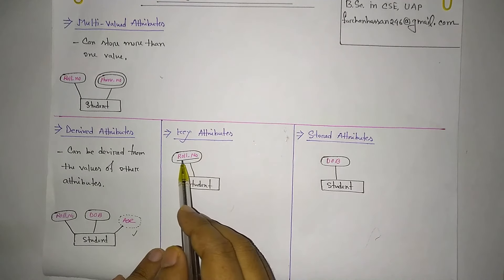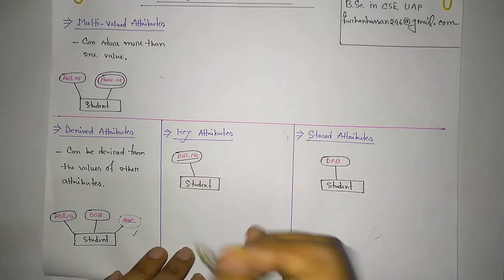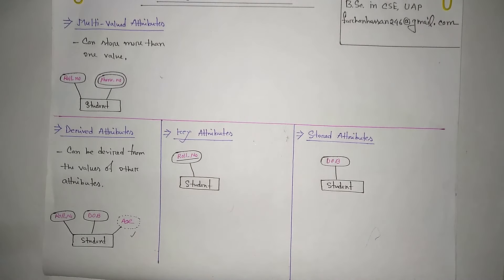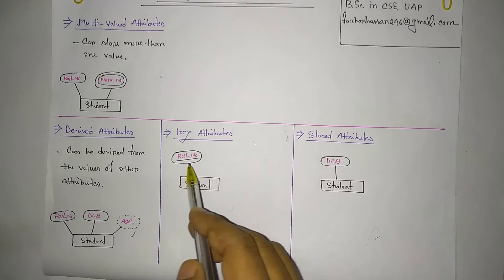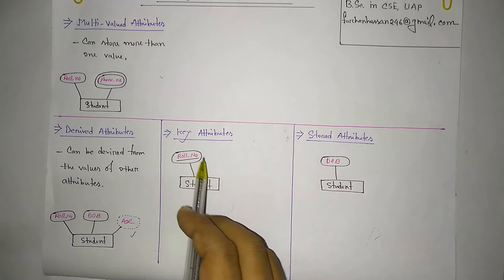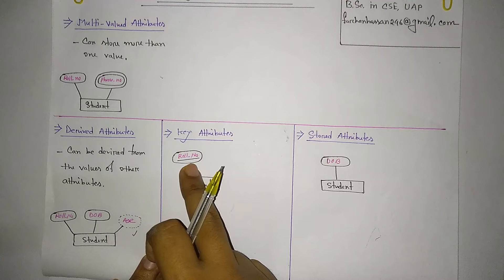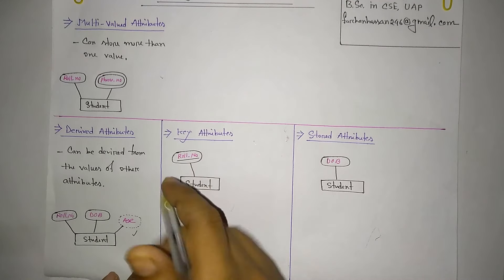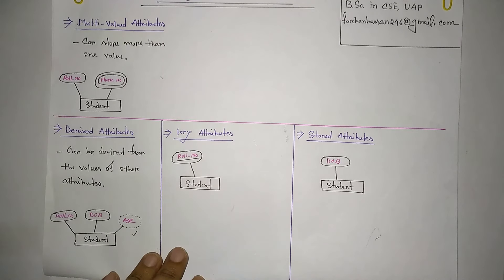Key attributes are used to uniquely identify an entity. For example, the roll number can uniquely identify a student. If the roll number were duplicated, it could not serve as a key attribute. The roll number is the primary identifier — it is the key attribute for the student entity.